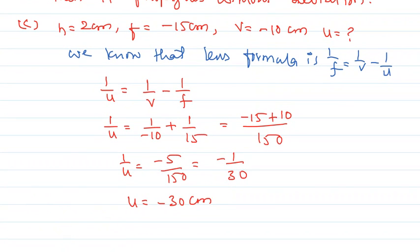So from here we can also write the nature. A concave lens always gives diminished image, virtual image, and erect image. Therefore, the size of the image is diminished.